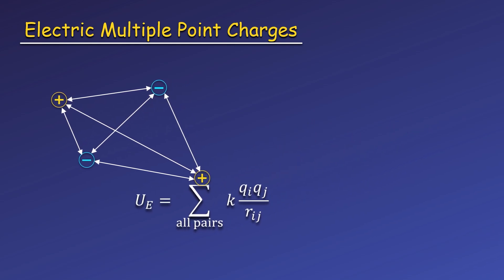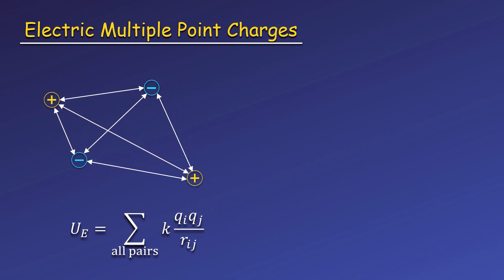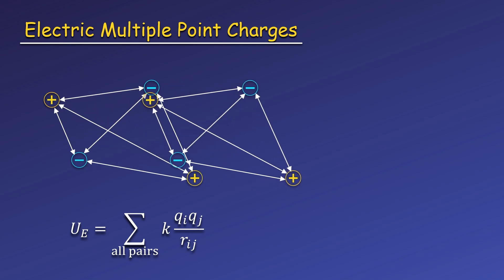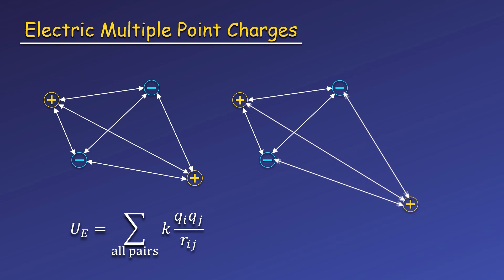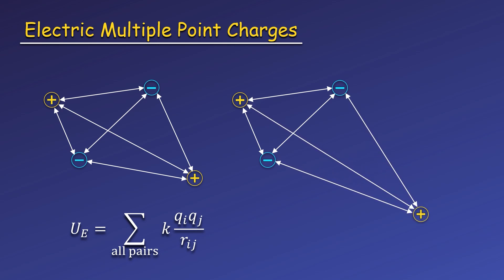Now remember, potential energy shows up when we use conservation of energy to solve problems, and there, the only thing that matters is the change in energy. So imagine we move one of the charges, holding the others fixed. The potential energy between the charges that remain still does not change — only the potential energy involving the charge that moved. This means we really only need to keep track of these and how they change. This often leads to only calculating the potential energy for interactions involving the charge you're interested in, so you may hear this called the potential energy of a specific charge. This is OK and gives the same result, but you should be aware of the subtleties. Potential energies are always between at least two objects, or in this case, two charges.